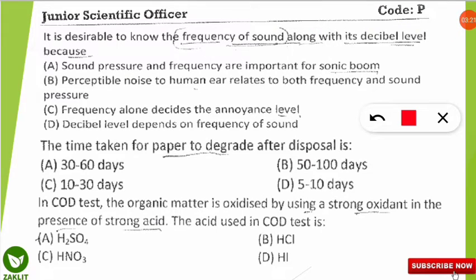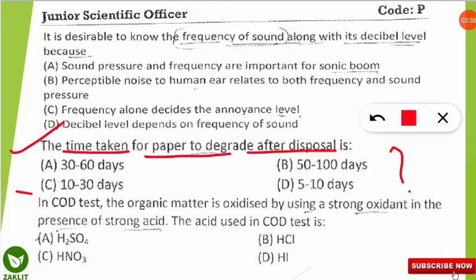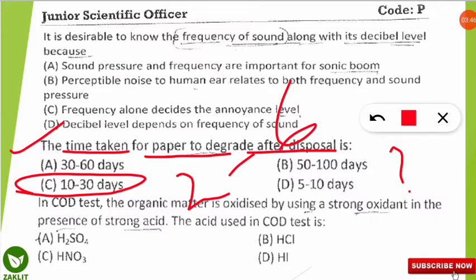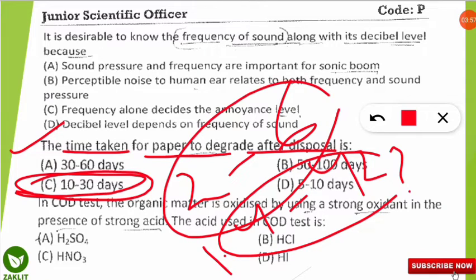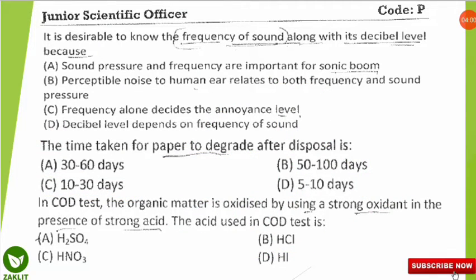The next important question: how long does paper take to degrade after disposal? Paper is biodegradable, but the time it takes matters. The correct option is C — 10 to 30 days. Typically, paper degrades in 2 to 6 weeks, which equals 14 to 42 days, and this range falls within the 10 to 30 day option. So option C, 2 to 6 weeks, is correct.